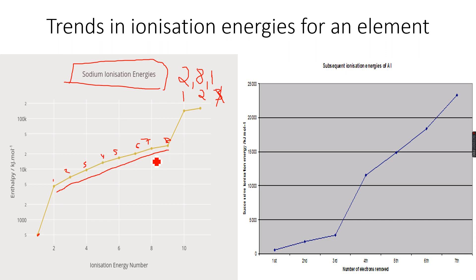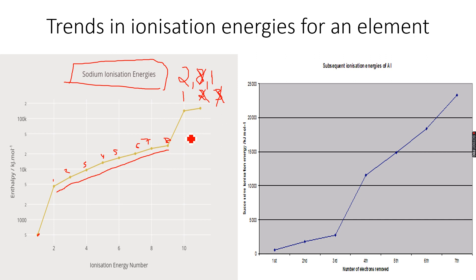There is a mild increase for eight electrons because there are eight electrons in the second shell. Once you have removed all eight electrons, there is a steep increase in ionization energy. This is because you have eliminated the second shell as well. Whenever there is a steep increase in energy, there is a change in shell. You've come down to the first shell, which is closest to the nucleus, so the force of attraction is greatest. That's why the most energy is needed — a very steep increase after the eight electrons from the second shell have been removed.